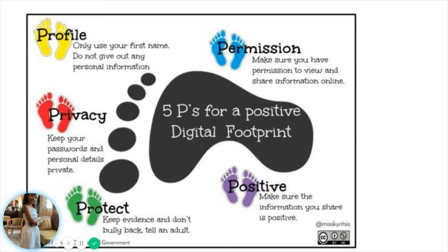Permission. Make sure you have permission to view and share information online. Like, if you take a photo of your friend and you want to post it online, you have to tell them first. Or if you want to post something online, you have to get permission from an adult — your parents, your big siblings, and all that stuff.